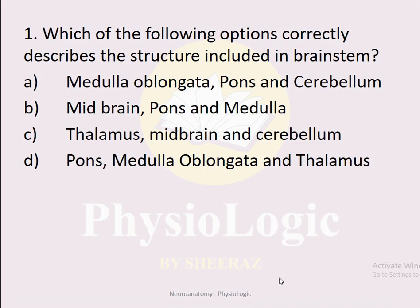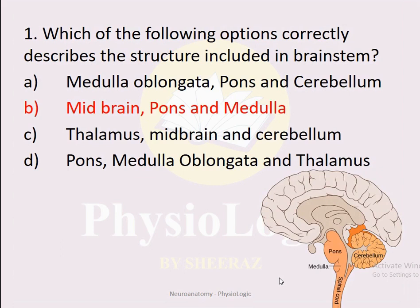The correct option is B: midbrain, pons, and medulla. This structure that includes medulla, pons, and midbrain is known as brainstem. If we collect pons, medulla, and cerebellum, this structure is known as hindbrain. You need to differentiate the structures included in the hindbrain from those included in the brainstem.